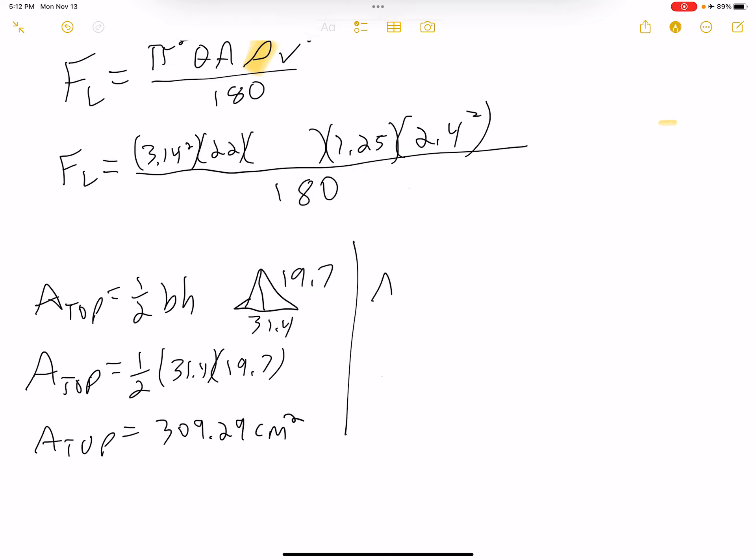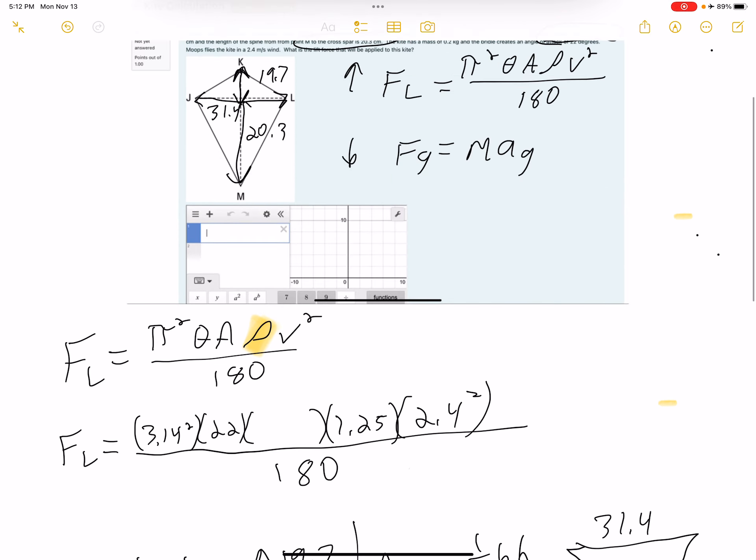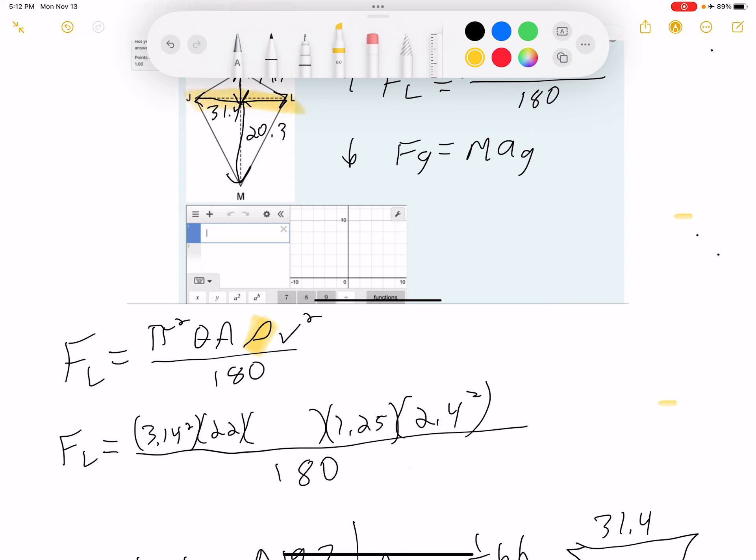Okay, now I'm going to find the area of the bottom. That is also equal to one half base times height. This time we have the bottom triangle. The base is the same. So if you look here, our base is 31.4. We have the same base. But now our height is going down. It is 20.3.